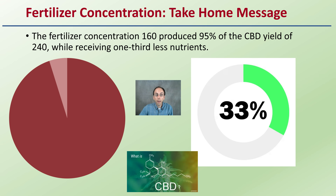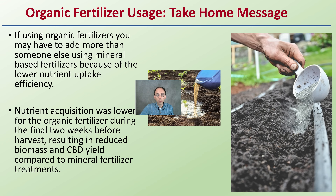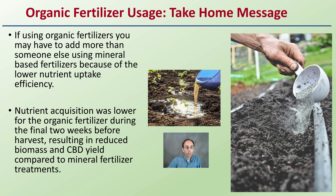The take-home message on fertilizer concentration: the 160 milligram per liter rate produced 95% of the CBD yield compared to the highest rate of 240, while receiving one third less nutrients. Getting 95% of the yield with a third less input really helps profitability and maximizes yields by minimizing inputs. Regarding organic fertilizer: you may need to apply more compared to mineral-based fertilizers due to lower nutrient uptake efficiency, and nutrient acquisition was lower for organic fertilizer during the final two weeks before harvest, resulting in reduced biomass and CBD yield.